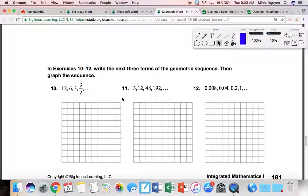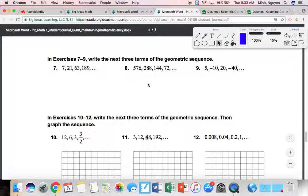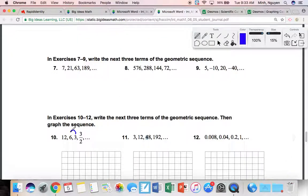The next two terms of the geometric sequence, then graph the sequence. Again, you're literally doing the same thing you did for 7 through 9. You're just dividing one term by the previous term to get the common ratio. This ends up being 0.5. This actually ends up being 3 over 4. Dividing by 2 is the same thing as multiplying the denominator by 2. 3 over 8 and 3 over 16.